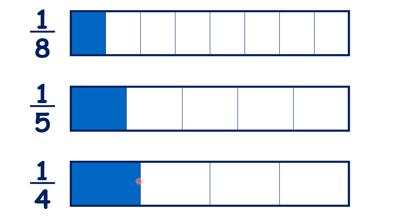You might be able to spot here that one-quarter is twice the size of one-eighth. So we would need two-eighths to have the same amount shaded blue as we have in one-quarter.